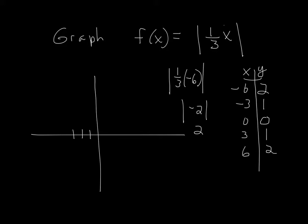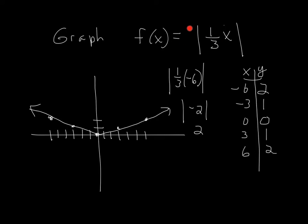Looking at the graph: negative six maps to two, negative three to one, zero to zero, three to one, six to two. There you go — probably what you expected. When there's a number multiplied in front, whether it's inside or outside the absolute value, a fraction — a number less than one like one-third or one-half — makes the V expand and open up wider. When that number is greater than one, like two, three, or four, it makes the graph get skinnier, like we saw in the last example.